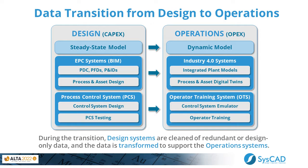During this transformation, design systems data is cleaned of redundant or design-only data and the data is transitioned to support the operation systems. Some examples of this transition from design to operations are shown here.